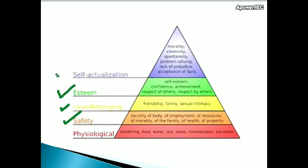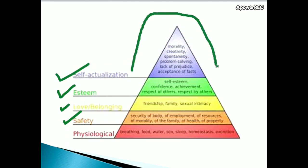The final level is self-actualization, which is the topmost part of Maslow's hierarchy of needs. Questions may ask: what is the topmost part of Maslow's hierarchy? So, self-actualization is the answer.